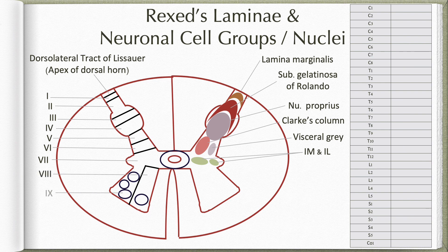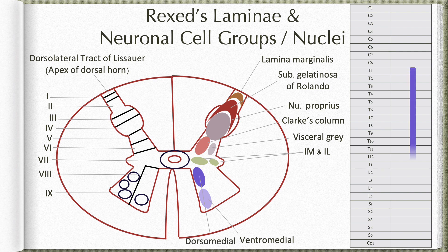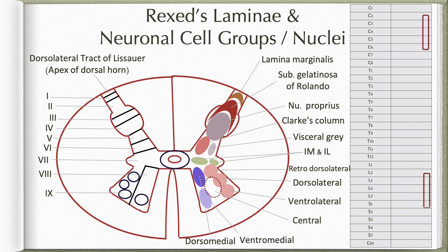Laminae 8 and 9 occupy the ventral grey horn. For neuronal cell grouping, the ventral grey horn is divided into three parts: a medial part, a central part and a lateral part. The medial part has a ventromedial nucleus extending the whole length and a dorsomedial nucleus extending through thoracic and upper lumbar segments. The lateral part has three nuclei: ventrolateral, dorsolateral and retrodorsolateral, all extending wherever there are limb enlargements — cervical and lumbar enlargements. The central group of nuclei is a discontinuous column found in upper cervical segments or in lumbosacral segments.